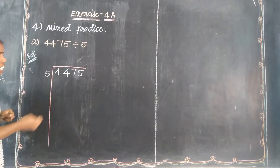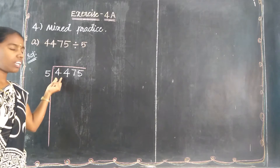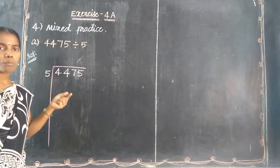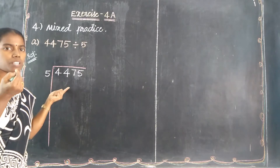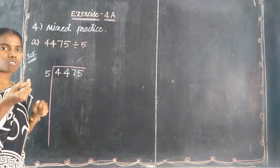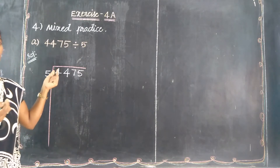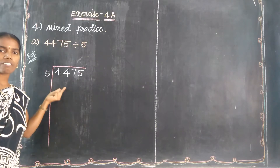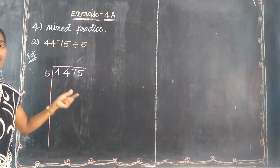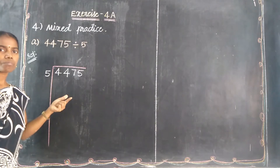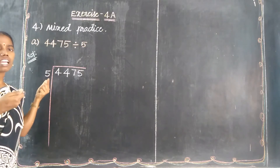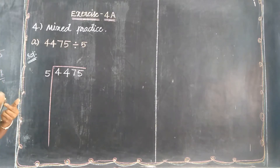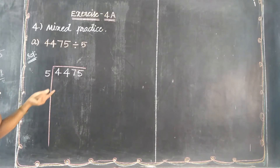Listen, students: first consider the 1-digit number — is it possible? No, because the dividend value 4 is less than the divisor 5, so it is not possible. Next, consider another digit: the 2-digit number is 44. Is it divisible by 5? The last digit is 4, not 5 or 0, so 44 is not exactly divisible by 5.